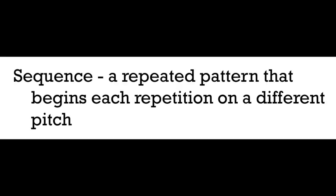Today we're going to talk about harmonic sequence. Harmonic sequence is an alternate way in which chords can progress to other chords. We use the word sequence in music to describe a repeated pattern that begins each of its repetitions on a different pitch. Sequences can be melodic when they just consist of one line, or they can be harmonic when they consist of a chord progression.